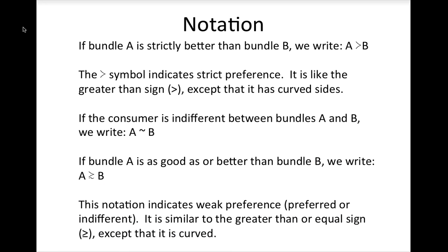Assuming that a consumer's preferences are complete, she should be able to tell us which bundle is better, or that she is indifferent between them. If bundle A is strictly better than bundle B, we write A is strictly preferred to B, using a symbol that looks like a greater than sign with curved sides. If the consumer is indifferent between bundles A and B, we write A is indifferent to B using a squiggle symbol. If bundle A is as good as or better than bundle B, we write A is weakly preferred to B, using a symbol similar to the greater than or equal sign but curved.